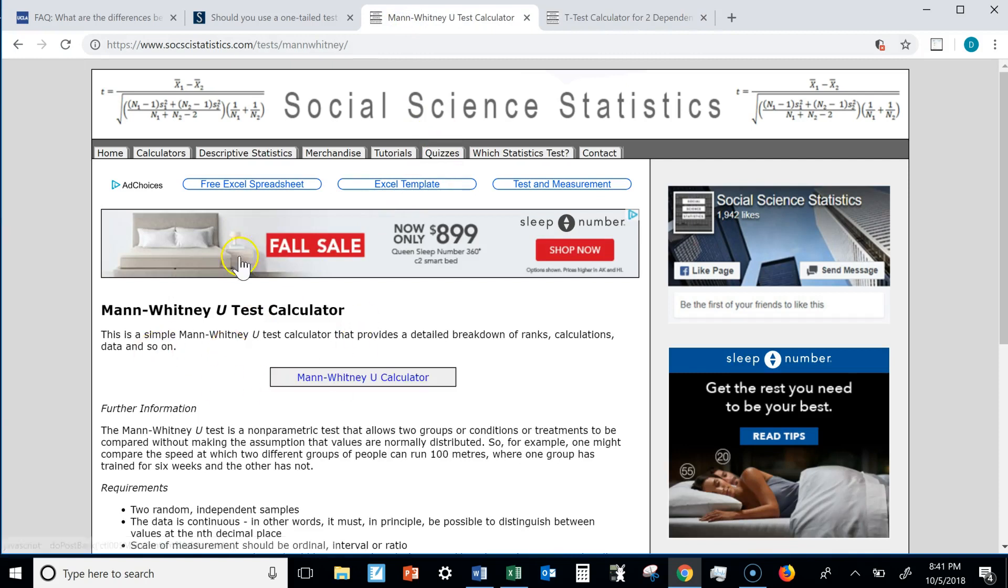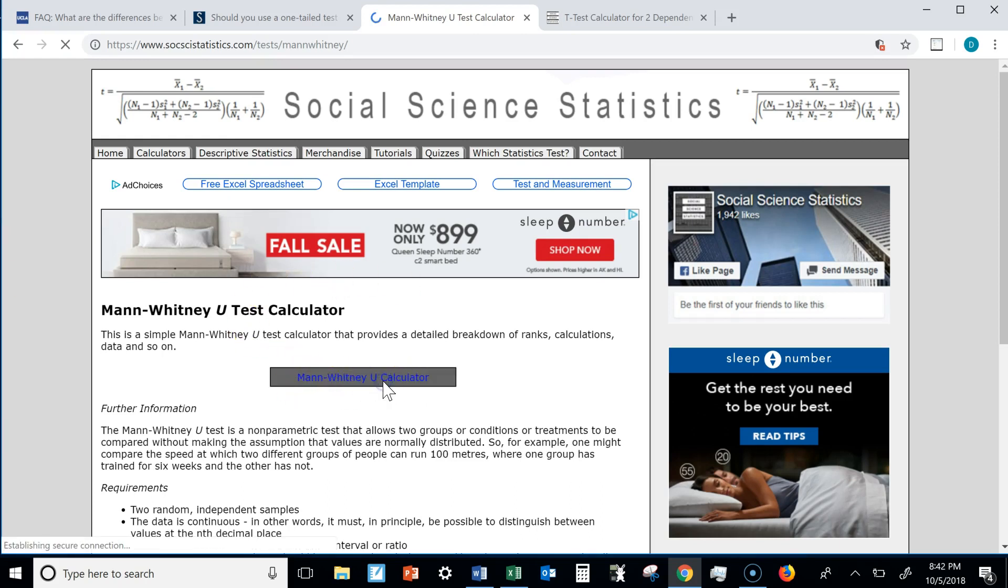But for many of our experiments, we'll be testing two separate groups and evaluating how close their means are, or their averages. So here's what you do. You click right here, take me to the calculator, the Mann-Whitney-U calculator.